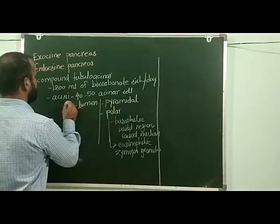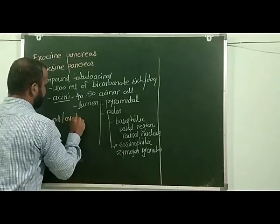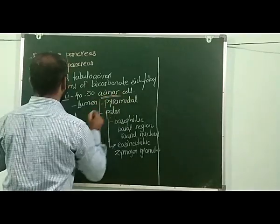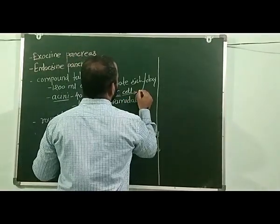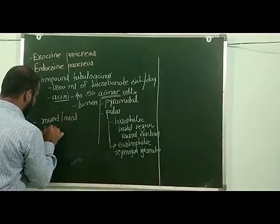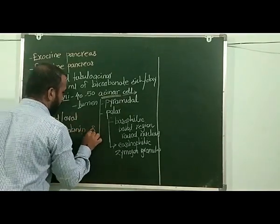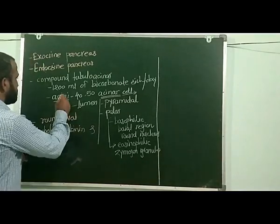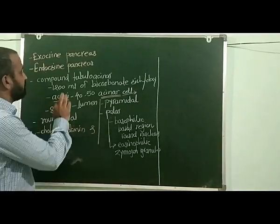These pancreatic acini are either round or oval in shape. The acinar cells that line this particular pancreatic acini have receptors for cholecystokinin and acetylcholine on the basal membrane. These acini constitute about 85% of the mass of the pancreas.